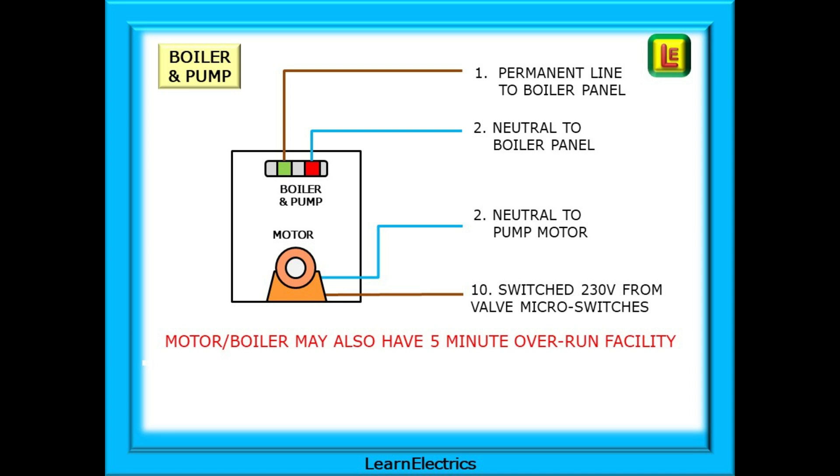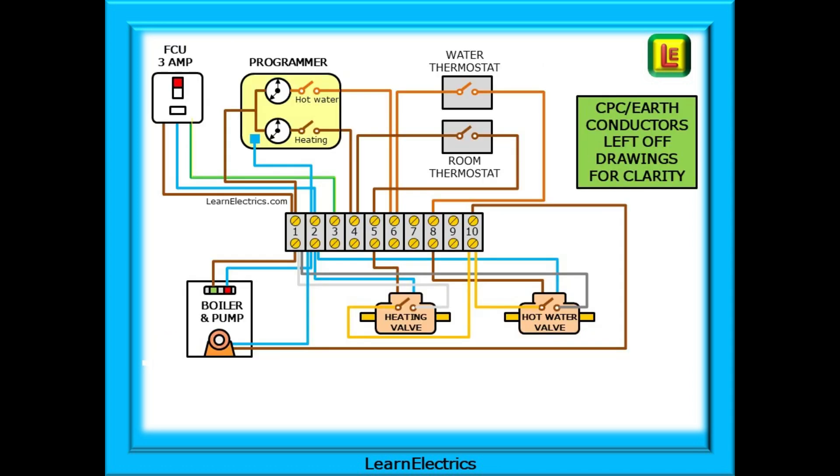It works in a similar way to the overrun for a bathroom extractor. And that is S-Plan. Hopefully you can now look at this wiring diagram and pick out the various components and the associated wiring for each of them. It is just a sequence of switches. One sequence for the hot water and another sequence for the room heating. Each has a programmer switch, a thermostat switch and a valve switch and unless all three switches are closed at the same time nothing will happen.